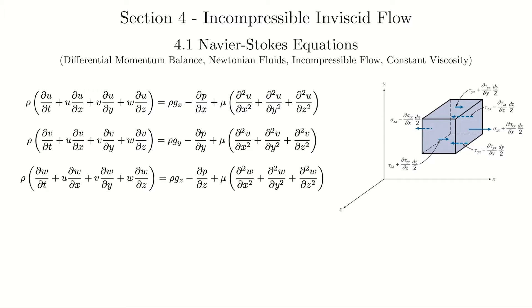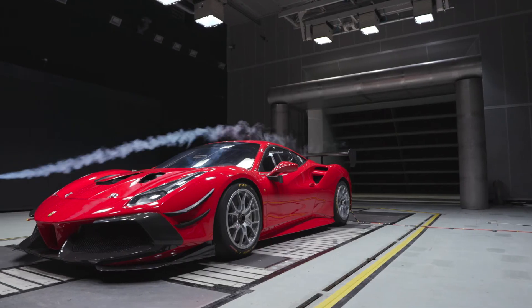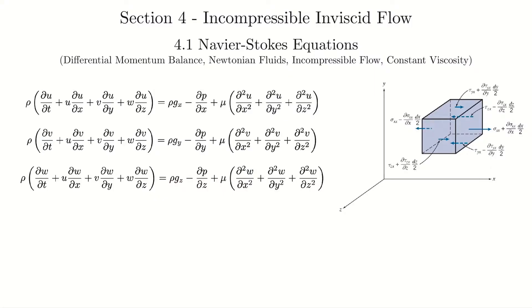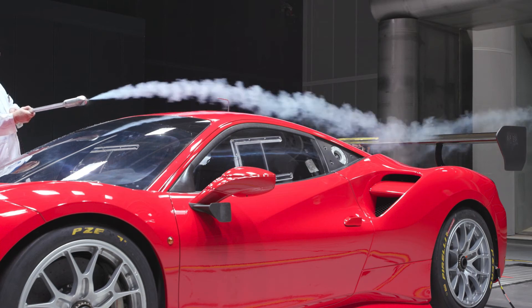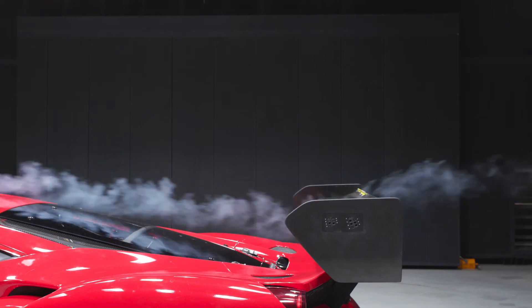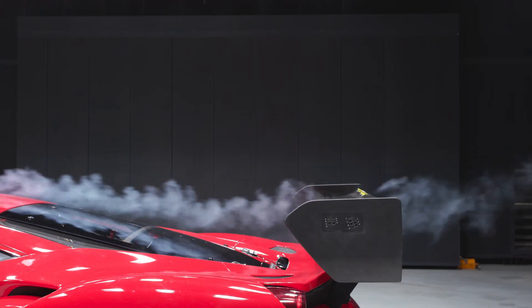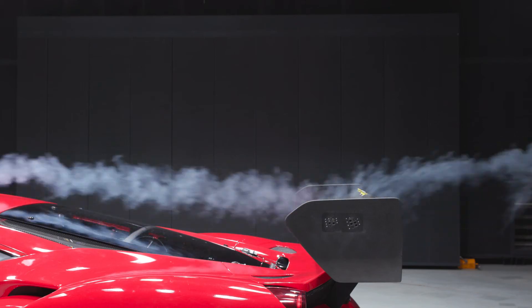In section three, we were analyzing control volumes using integral equations, and we saw that type of analysis is really useful for understanding the forces on objects. For example, if you were looking at a rocket or a race car, or even the wing on a race car, you can figure out all the forces on it with those integral equations. But section three didn't give us the information describing the velocity flowing around a wing, or the pressure distribution around the wing that actually generates those forces.